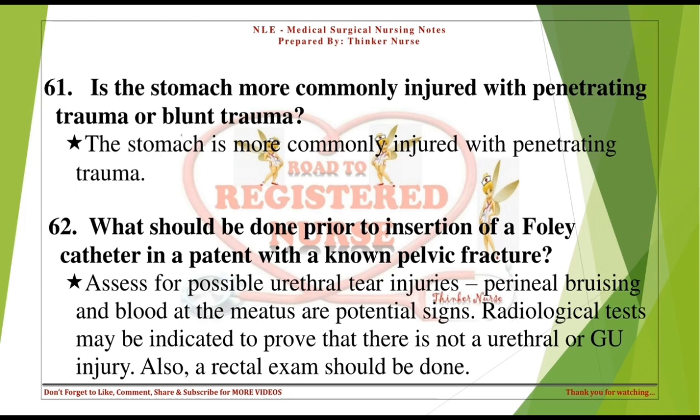What should be done prior to insertion of a Foley catheter in a patient with a known pelvic fracture? Assess for possible urethral tear injuries — perineal bruising and blood at the meatus are potential signs. Radiological tests may be indicated to prove there is no urethral or GU injury. A rectal exam should also be done.